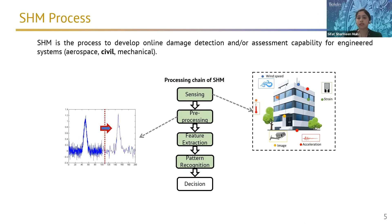Once you decide on the response of interest, the second step is preprocessing. Once you instrument your structure and get the data, you cleanse it using filtering and noise removal so that it's more meaningful.